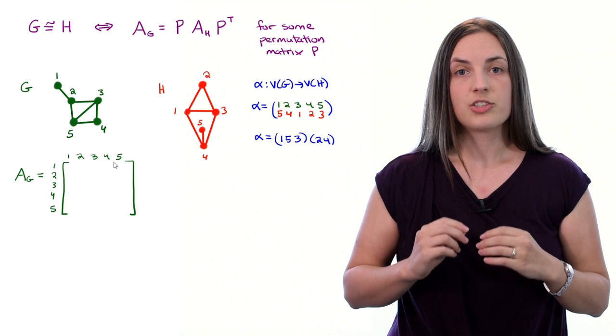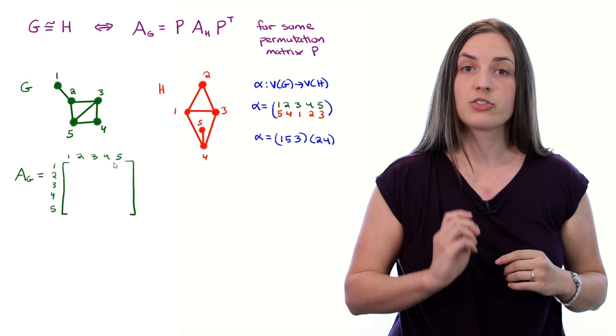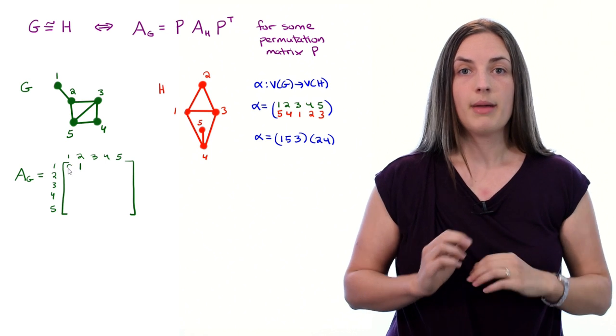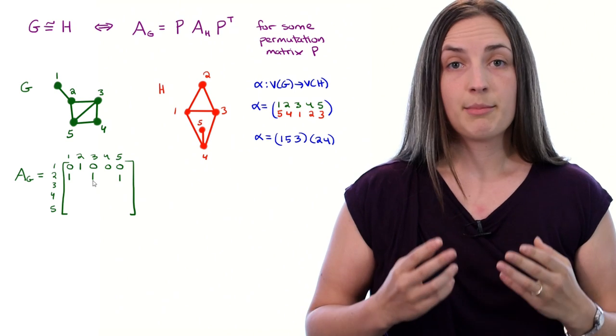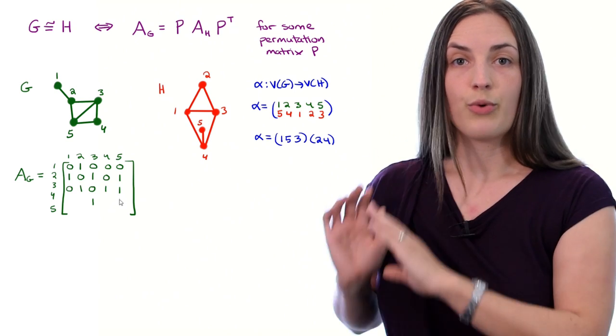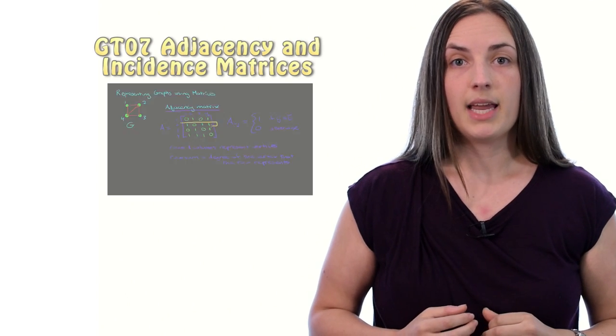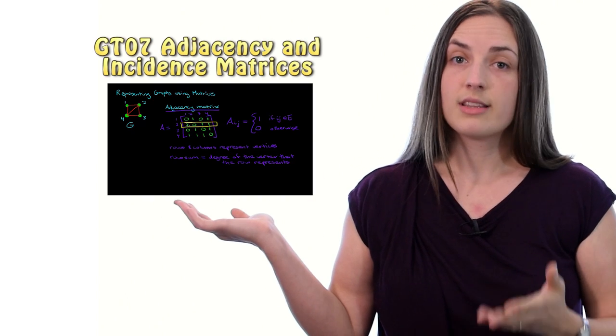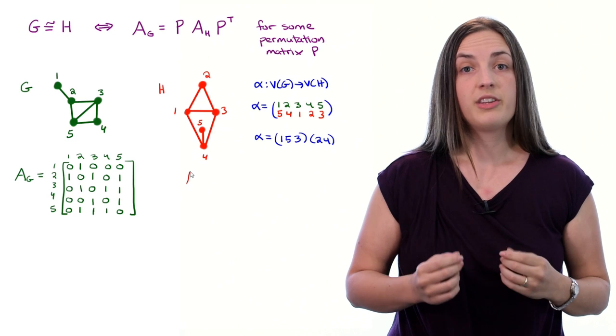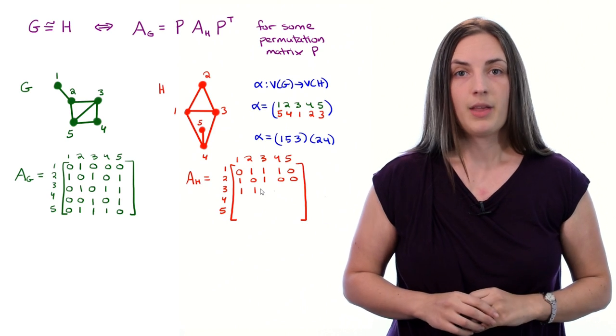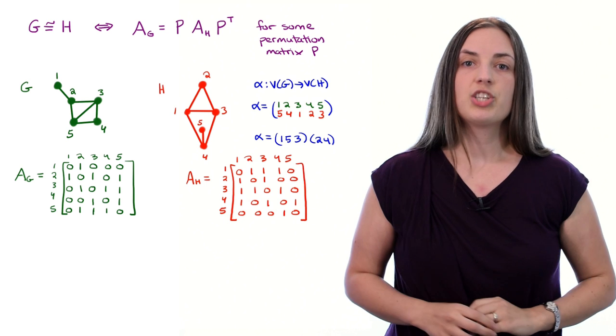Similarly, we can fill in the rest of the adjacency matrix. If you'd like a review of the details of how an adjacency matrix is made, click on this video or see the links in the description below. We build the adjacency matrix of graph h in exactly the same way, and we end up with these two adjacency matrices.